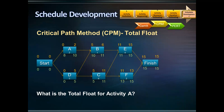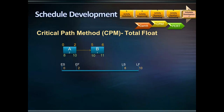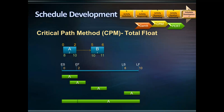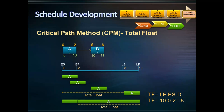What is the total float for activity A? The earliest finish date of activity A is at day 2, when activity A starts immediately. However, activity A can start any time between day 0 and day 8. If activity A starts later than 8 days or is lengthened more than 8 days, it will be completed later than day 10, impacting succeeding activities and consequently the project's completion date. So the maximum available time for activity A to float without impacting the completion date is 8 days. The formula: total float equals late finish minus early start minus the duration.